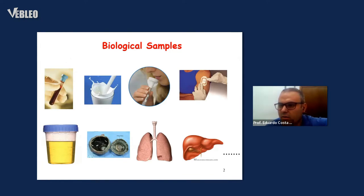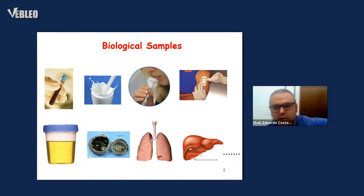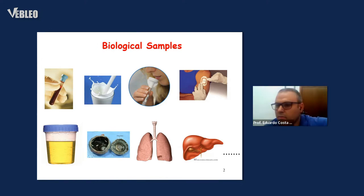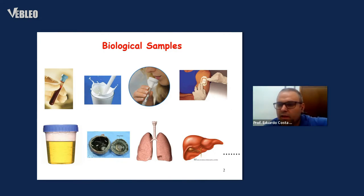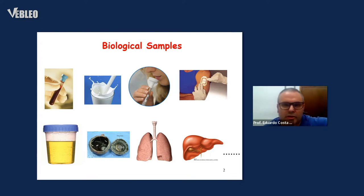Biological samples are very complicated samples, very complicated matrices, mainly due to the presence of many concomitant molecules, like proteins. When we're talking about blood, for example, we have a large amount of proteins. These proteins are very complicated in analytical procedures because we can have modification of the extraction proportion and difficulty to validate the methods, among others.